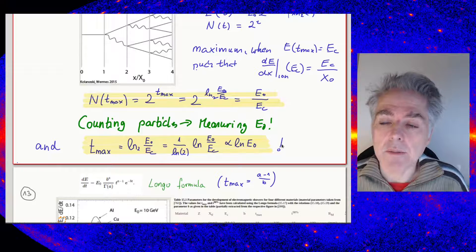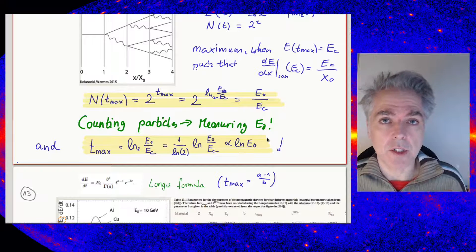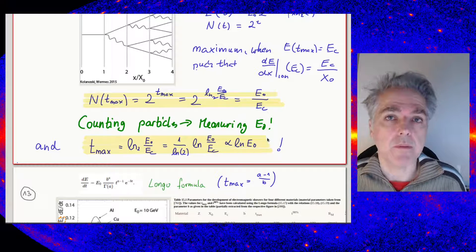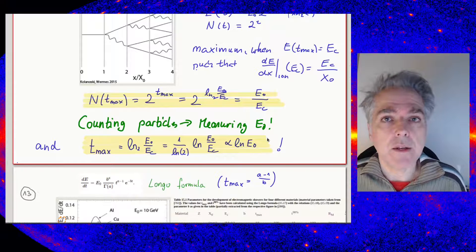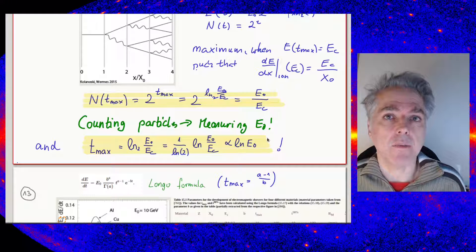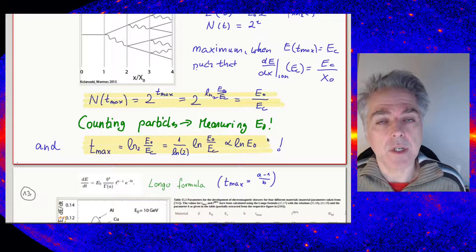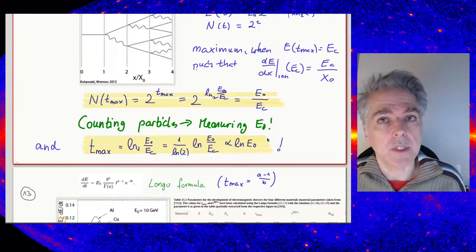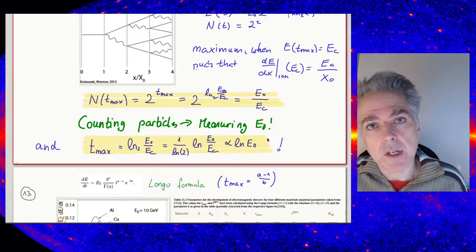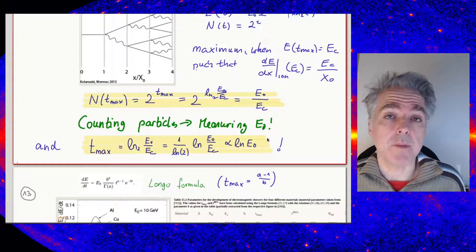The position of the maximum also depends logarithmically on energy. A calorimeter must be sufficiently thick in terms of radiation lengths to capture the maximum, and should extend roughly 8 to 16 radiation lengths beyond the maximum to capture about 98% of the energy. At some point, increasing energy will cause the shower maximum to exceed the calorimeter depth, leading to particle leakage.